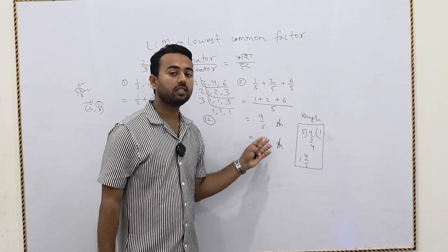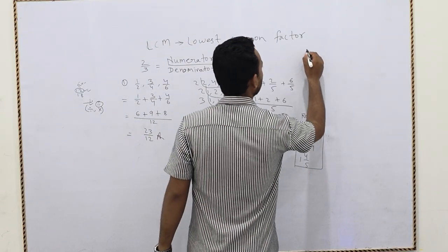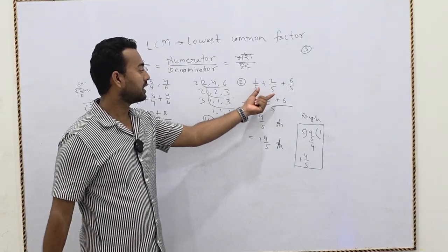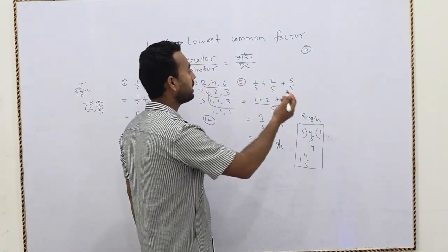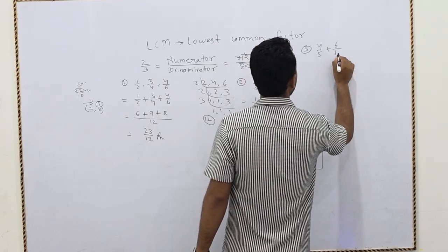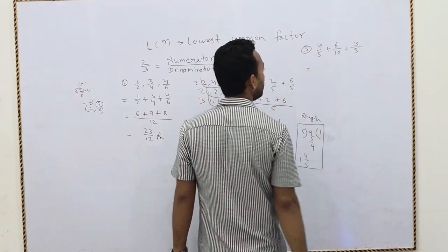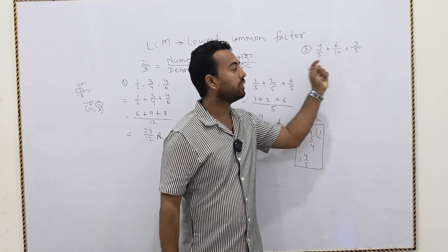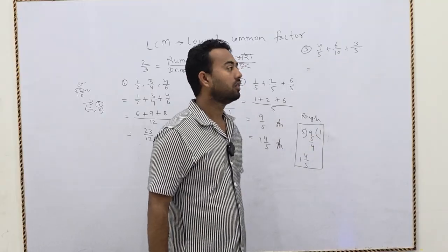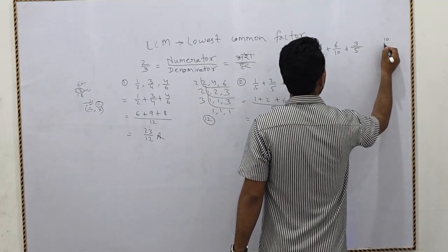Now here is one more example. We have seen same denominators and different denominators. I am taking another question: 4/5 + 6/10 + 3/5. Here you can see two denominators are the same (5 and 5) but one is different (10). It is a little different from the first question. We look at which denominator is greatest — that is 10 — and write the table of 10: 10, 20.